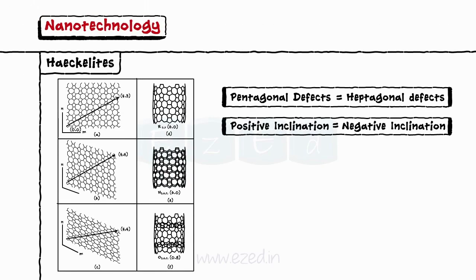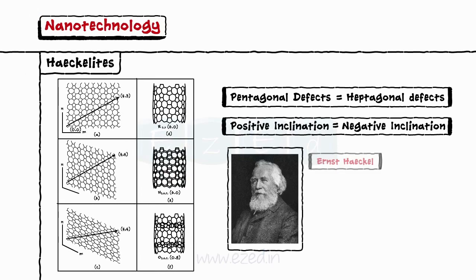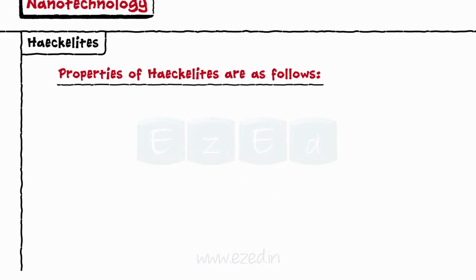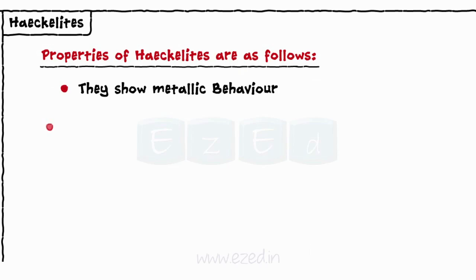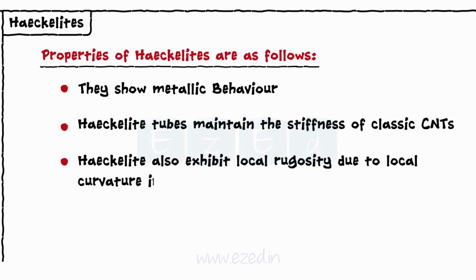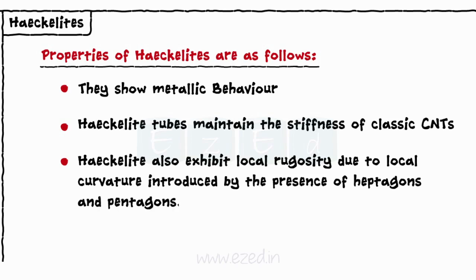These arrangements are known as haeckelites, in honor of Ernst Haeckel, a German zoologist. Properties of haeckelites are as follows: they show metallic behavior; haeckelite tubes maintain the stiffness of classic CNTs; haeckelites also exhibit local rugosity due to local curvature, introduced by the presence of heptagons and pentagons.